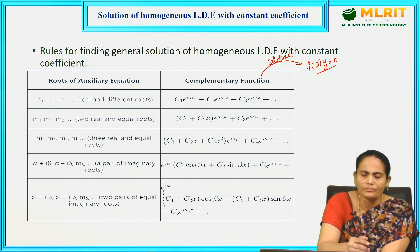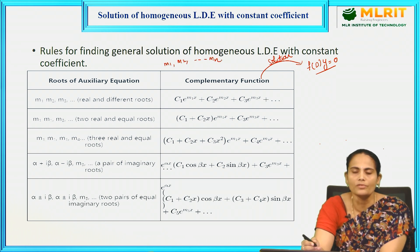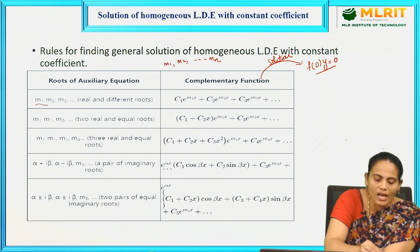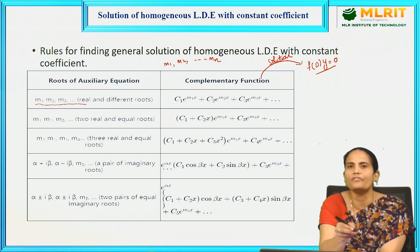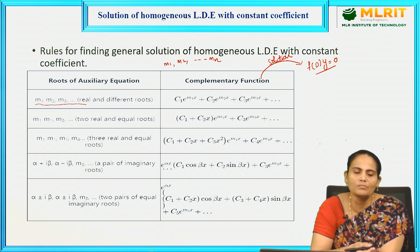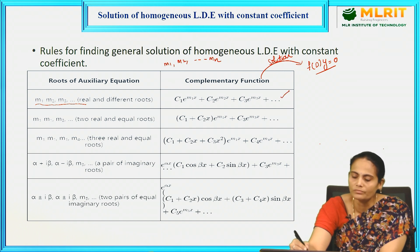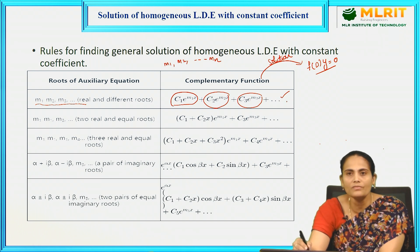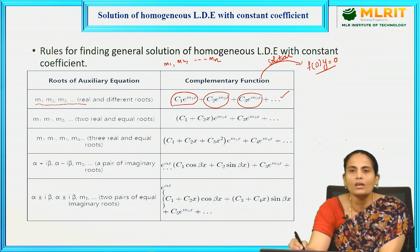Case 1: If m₁, m₂, ..., mₙ are real and distinct roots, the complementary function is written as: CF = C₁e^(m₁x) + C₂e^(m₂x) + C₃e^(m₃x) + ... For example, if m₁ = 1 and m₂ = −2, these are real and different, so the CF is C₁e^x + C₂e^(−2x).